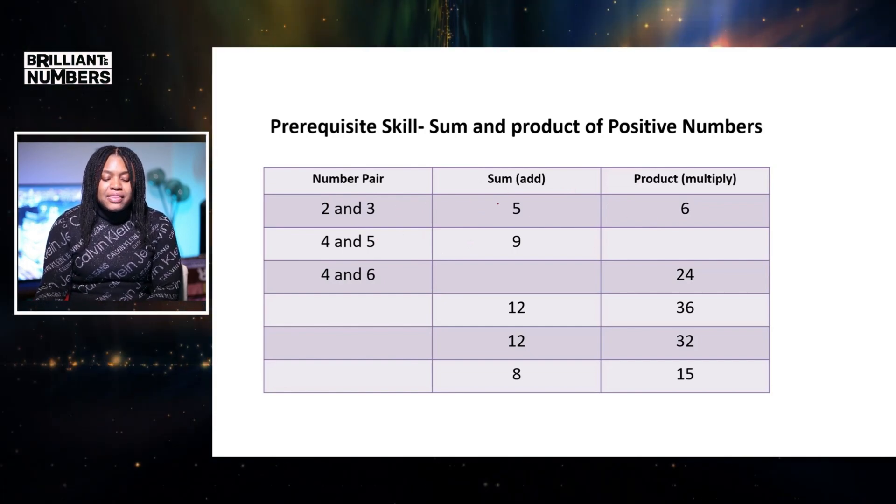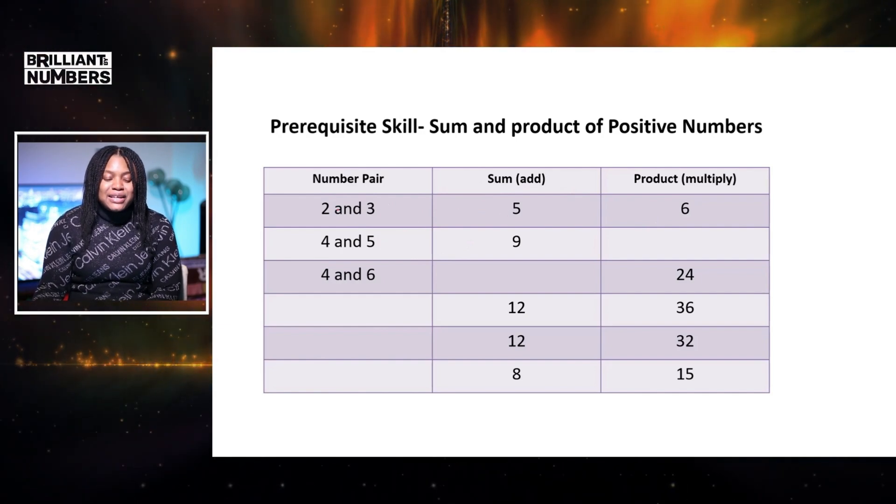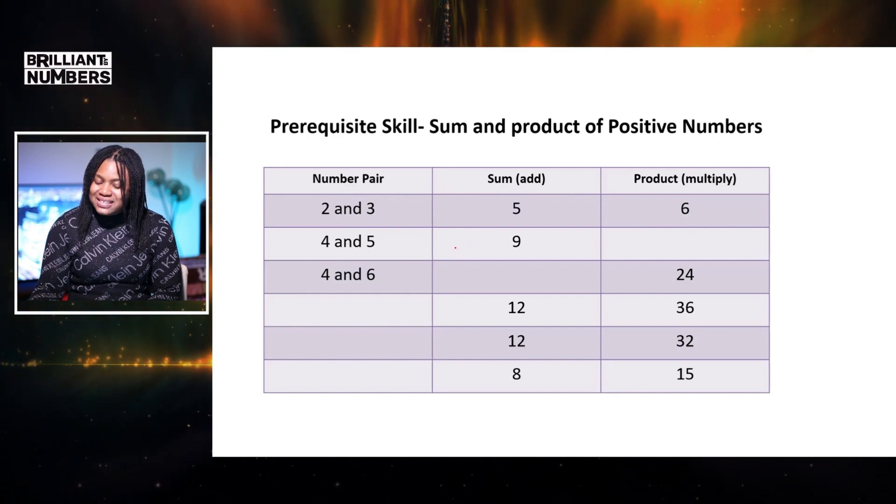2 and 3, the sum of 2 and 3 is equal to 5. And the product, when we multiply 2 times 3, the answer is 6.